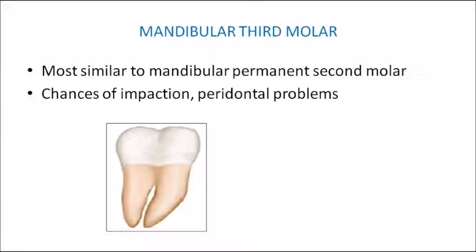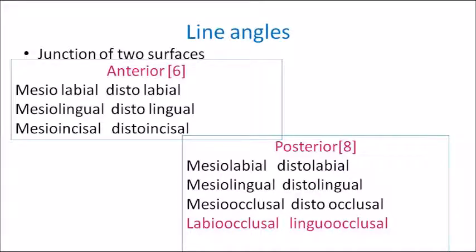The mandibular third molar has a greater chance of impaction and is more prone to periodontal problems and pericoronitis due to its unique eruption pattern. Its occlusal anatomy is similar to the mandibular permanent second molar. Regarding line angles — the junction of two surfaces — anterior teeth have six line angles and posterior teeth have eight line angles. For example, on an incisor the labial surface meets the mesial surface (mesolabial line angle) and the distal surface (distolabial line angle), and the lingual surface similarly meets mesial and distal surfaces.